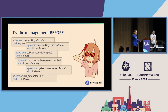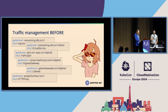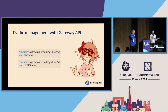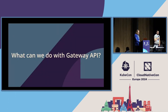Before Gateway API there was a proliferation of traffic management APIs — Istio's VirtualService, the SMI TrafficSplit that Linkerd used, the Ingress v1 API, and others. With Gateway API, hopefully you should just be able to focus on two main stable-channel resources: the Gateway resource, which represents your infrastructure, and the HTTPRoute, which is how you write your routes. There's also a GatewayClass, which someone has to create but may not be you.